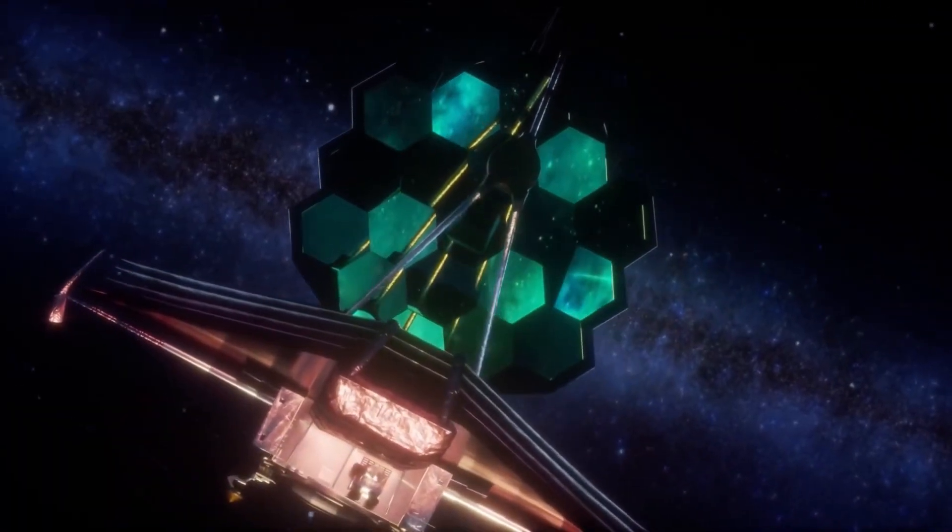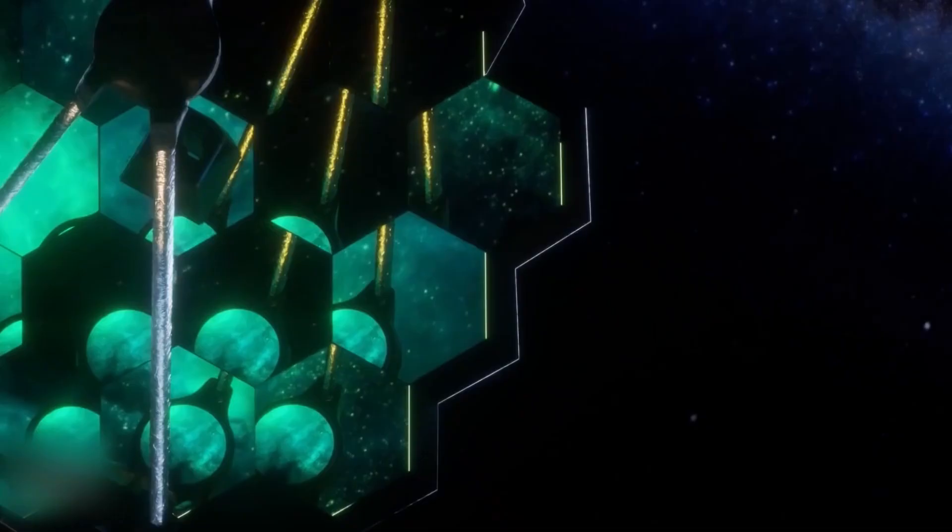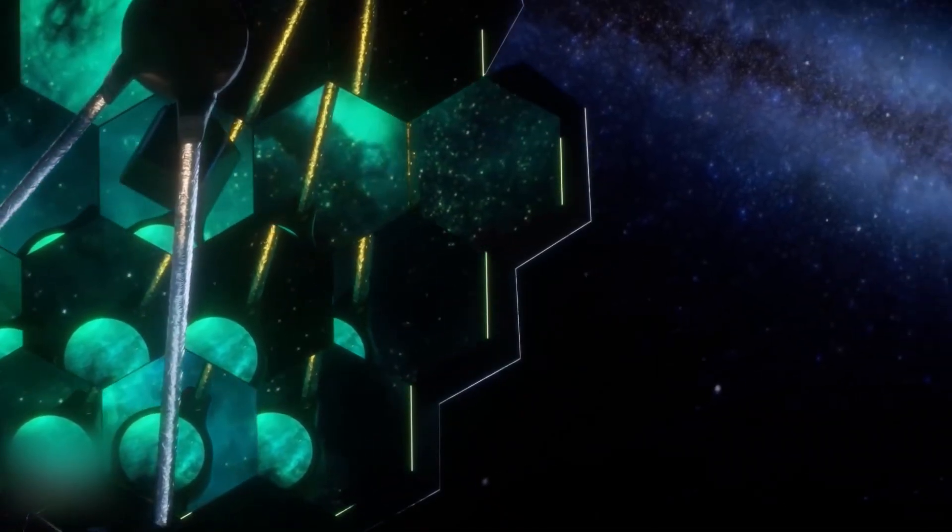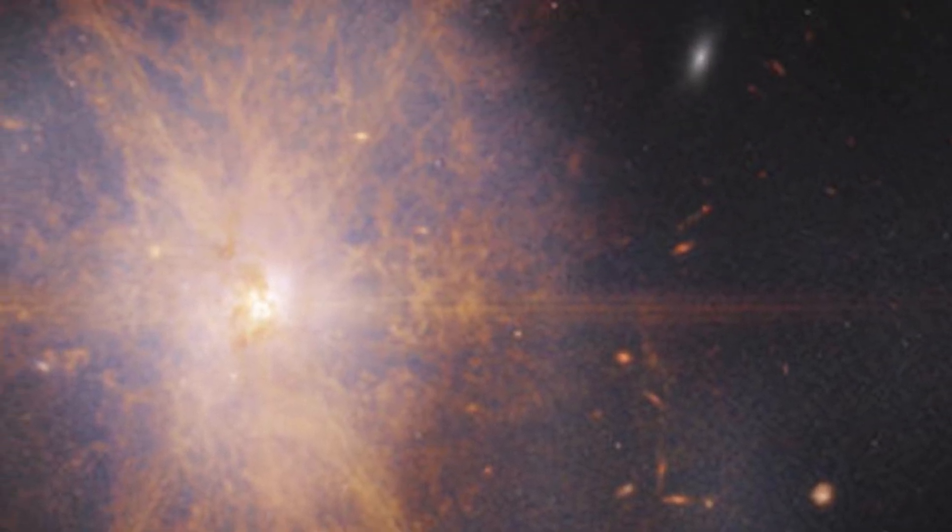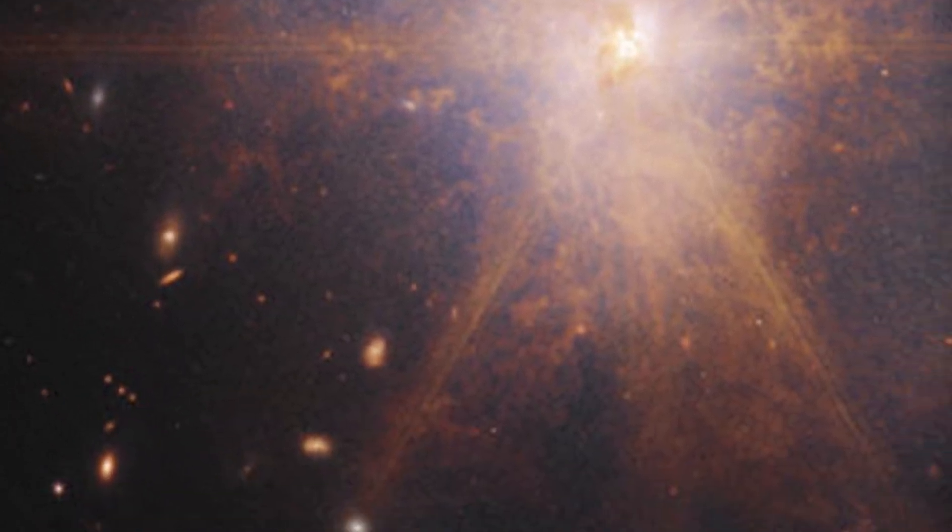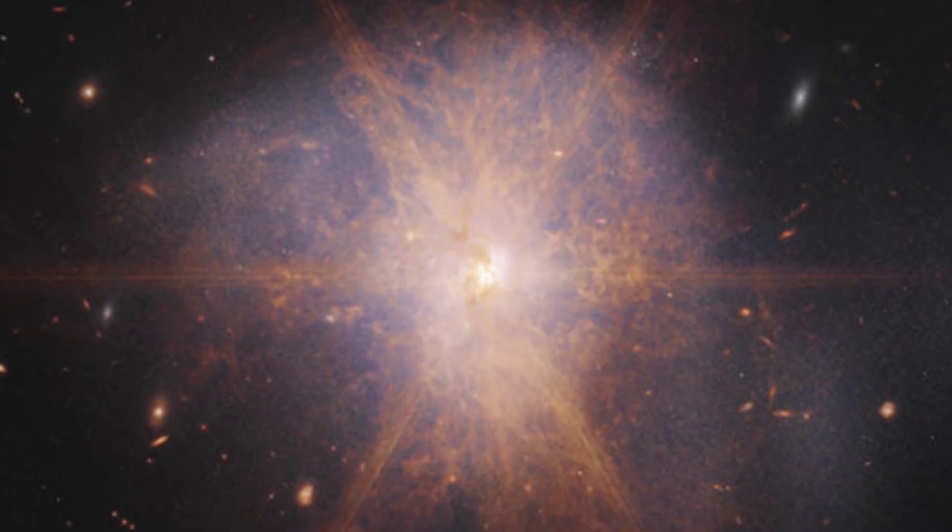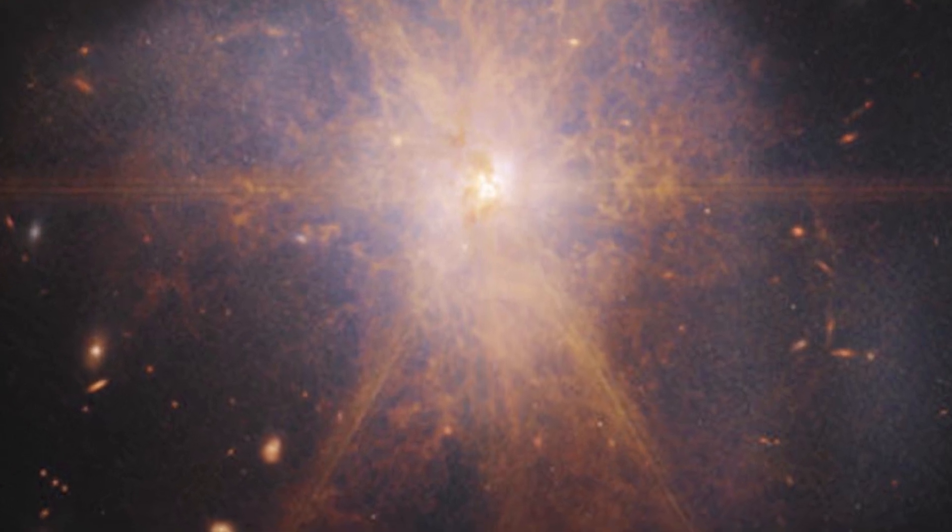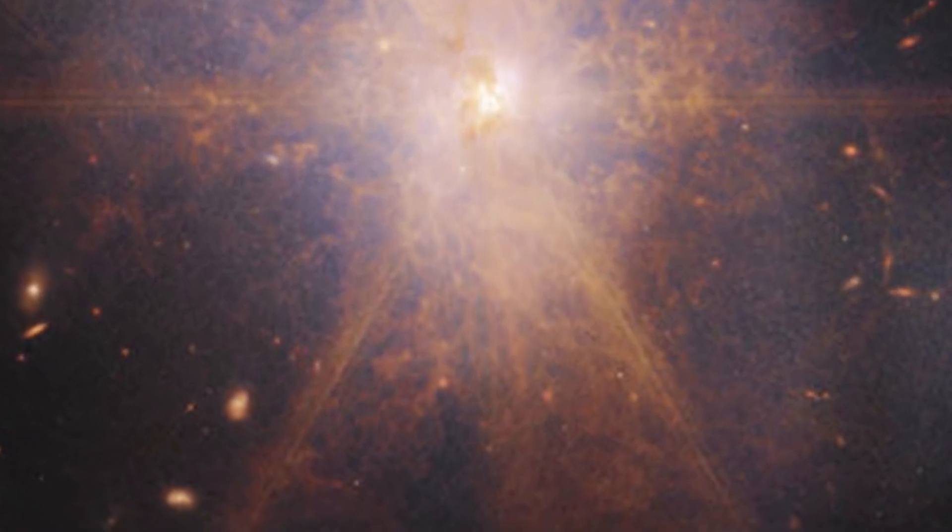This latest view from the James Webb Space Telescope shows an impressive galactic merger of the two galaxies. This image also shows faint tidal tails extending from the outskirts of the merger, indicating the gravitational pull between the two galaxies. The reddish and orange streams and filaments represent scattered organic materials in ARP-220.